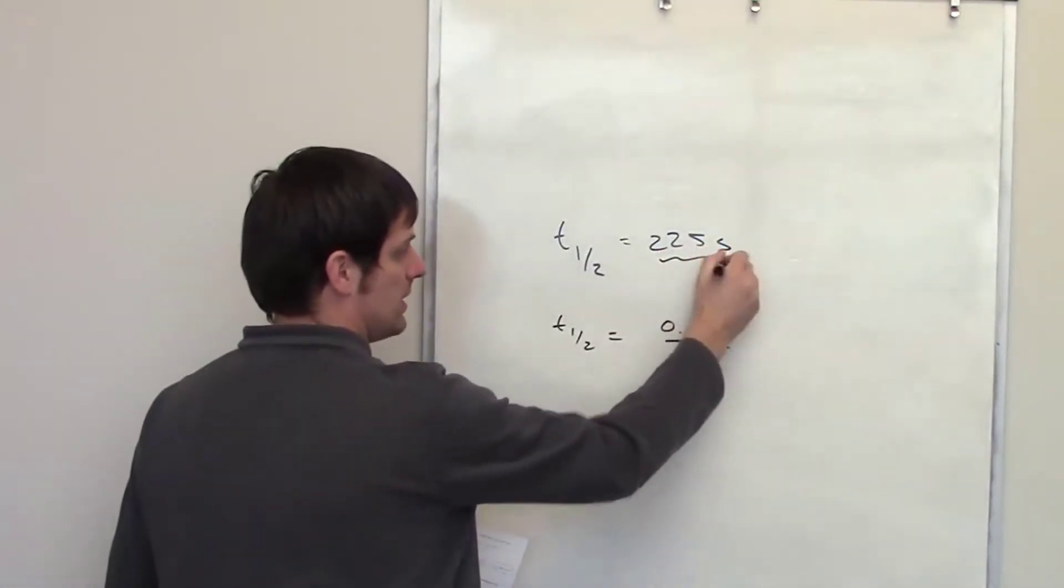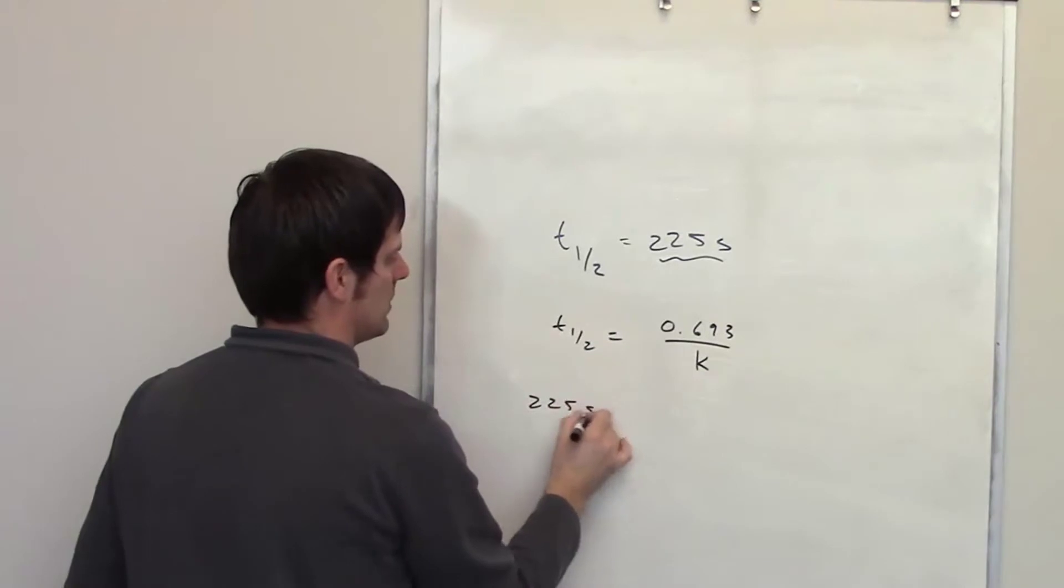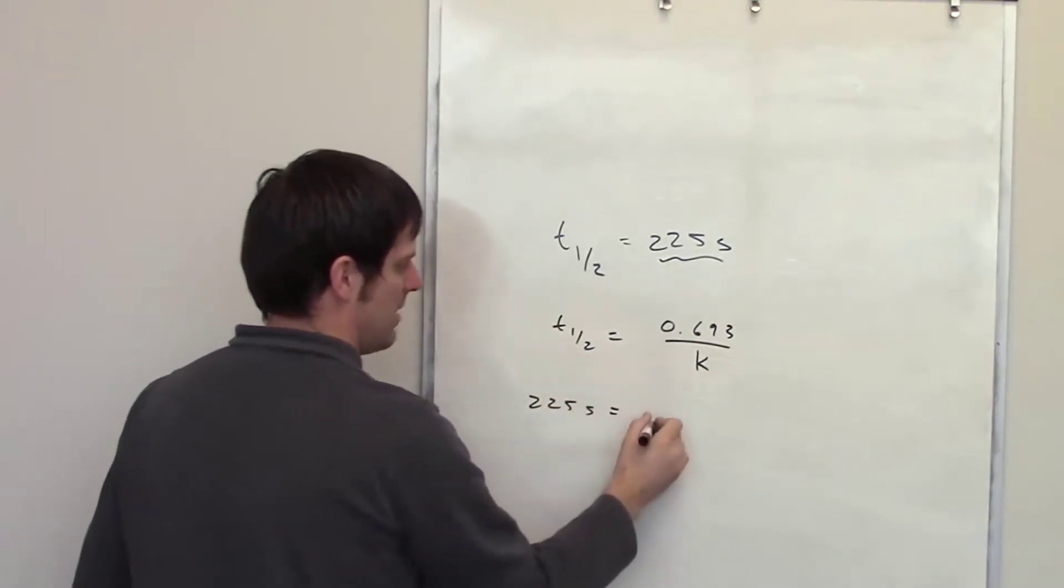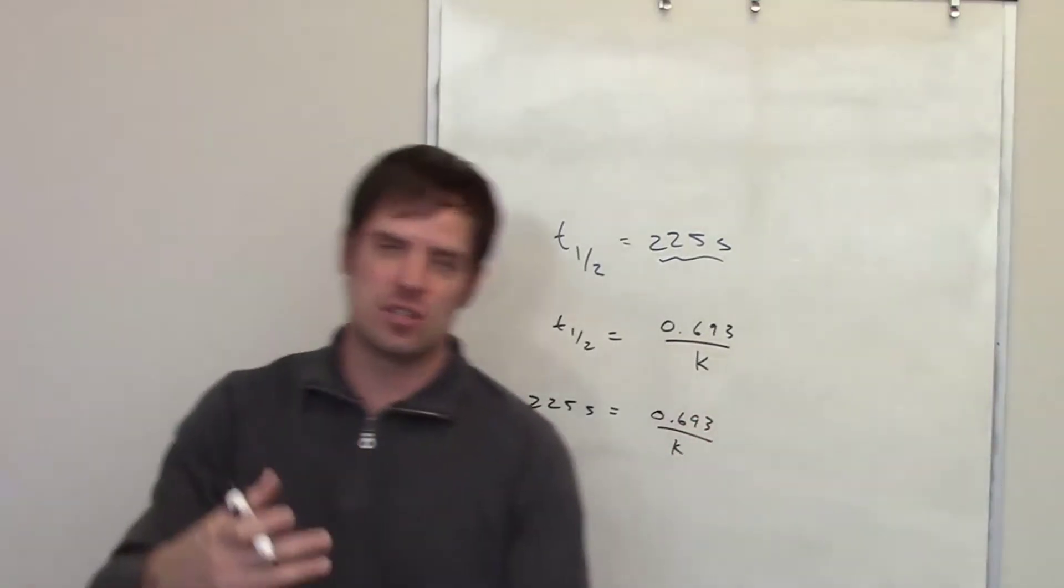What I have here is the half-life, and I'm trying to figure out what k is, so I put down 225 seconds, or t1 half, equals 0.693 divided by k, and then I use algebra to solve for k.